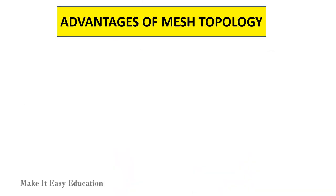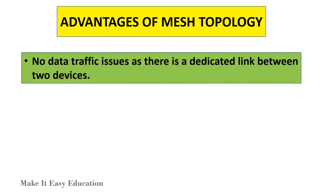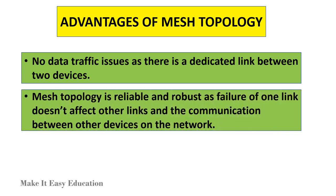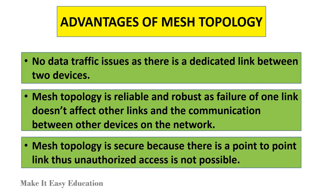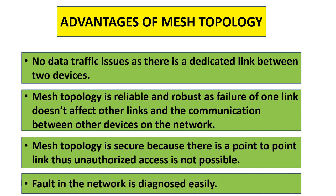Advantages of mesh topology: No data traffic issues, as there is a dedicated link between two devices. Mesh topology is reliable and robust, as failure of one link doesn't affect other links and the communication between other devices on the network. Mesh topology is secure because there is a point-to-point link, thus unauthorized access is not possible. Fault in the network is diagnosed easily.